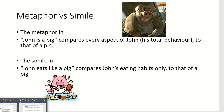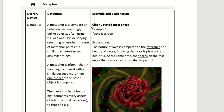Let's go to the worksheet. You should have the package for language for impact. Turn to the page on metaphor. The definition: a comparison between two seemingly unlike objects, often using 'is' and 'was.' The use of a metaphor points out similarities between two dissimilar objects.